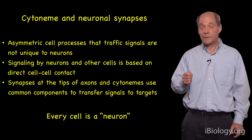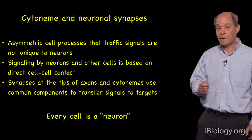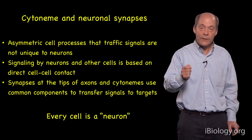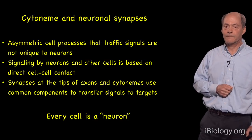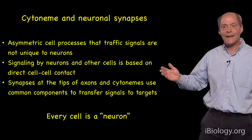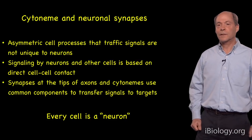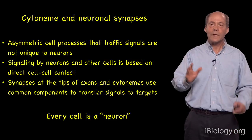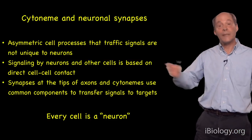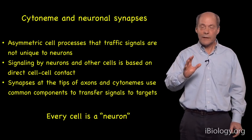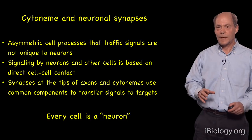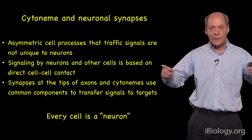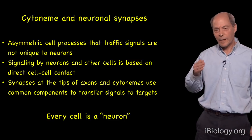All four genes — Neuroglian, Shibire, Diaphanous, and Capricious — previously shown to be required for neuronal synapses, are also needed to make the synapses that cytonymes make. In that sense, we can say every cell is a neuron, in that every cell makes asymmetric processes to send and receive signals. This tells us that the ancestor to a neuron must have had the fundamental cell biology to make asymmetric processes to send and receive signals. Neurons have taken that fundamental mechanism and elaborated it, but all cells retain that ability for cell-cell communication at points of direct contact, at both short and long distance.